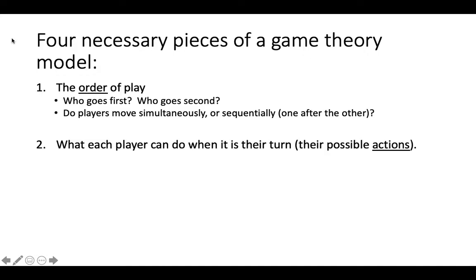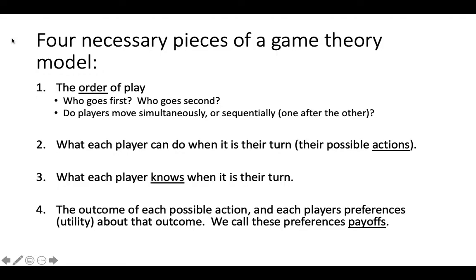Next, we need to know what possible actions a player can take when it is their turn and what they know when it is their turn. Finally, we need to know the outcome of each action and how each player likes each outcome relative to the other possible outcomes of the game. We use payoffs to represent how much a player likes one outcome relative to another.